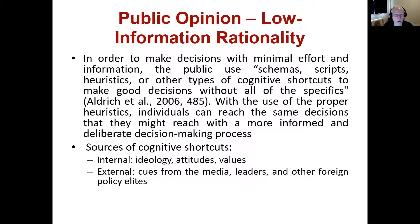It's not all bad news. Early on, we did studies in political science about how little people know, which was very concerning — does this mean that people are systematically making bad decisions? It turns out that even though people don't know much about politics, they can often make decisions that are in line with their interests — often able to make the same decisions they would have made with full information. To make these decisions with minimal effort, they use what are called schemas, scripts, or heuristics — rules of thumb or cognitive shortcuts — to make good decisions without all the specifics.